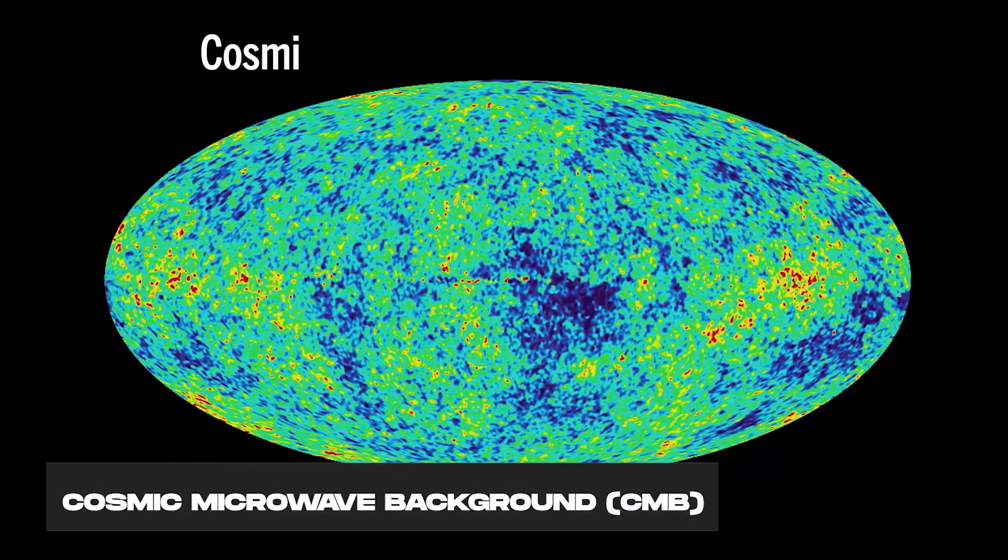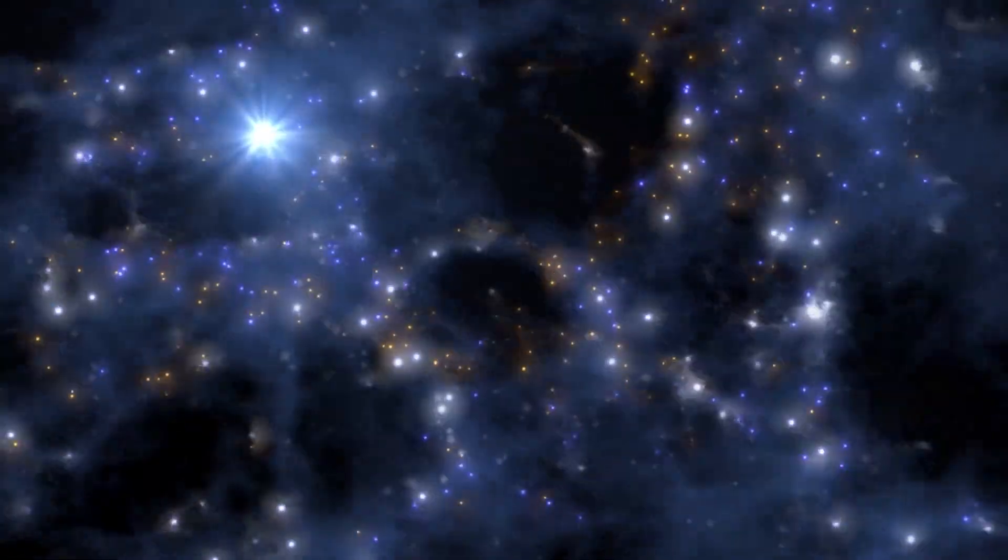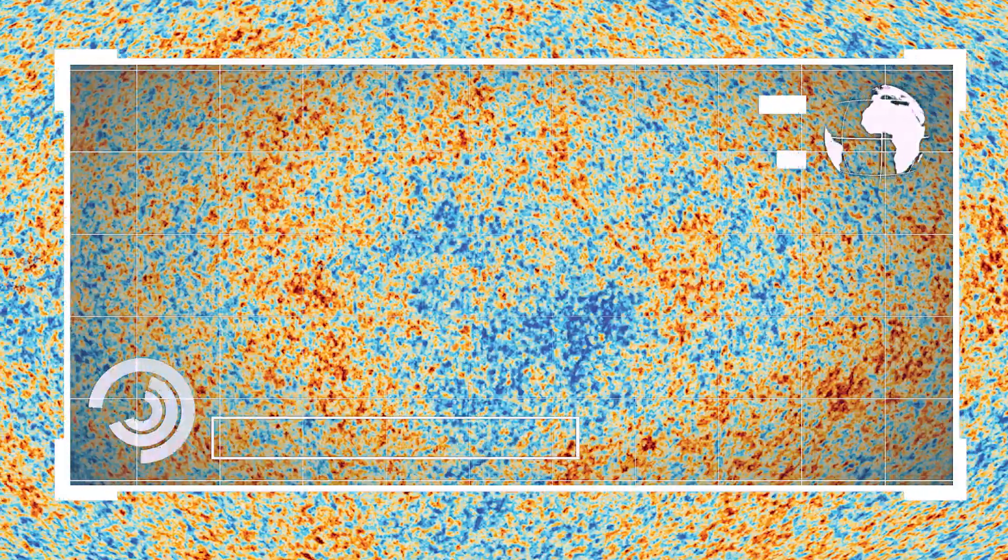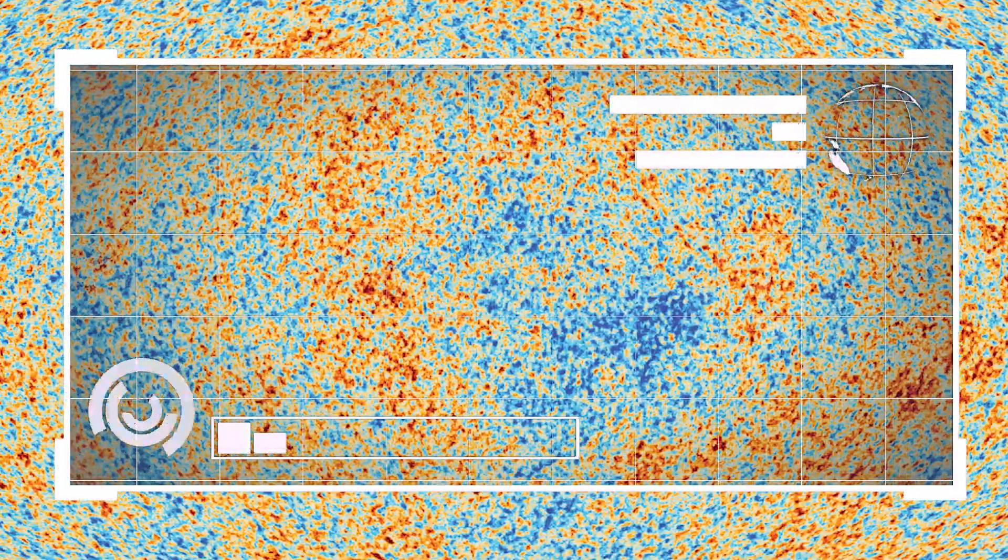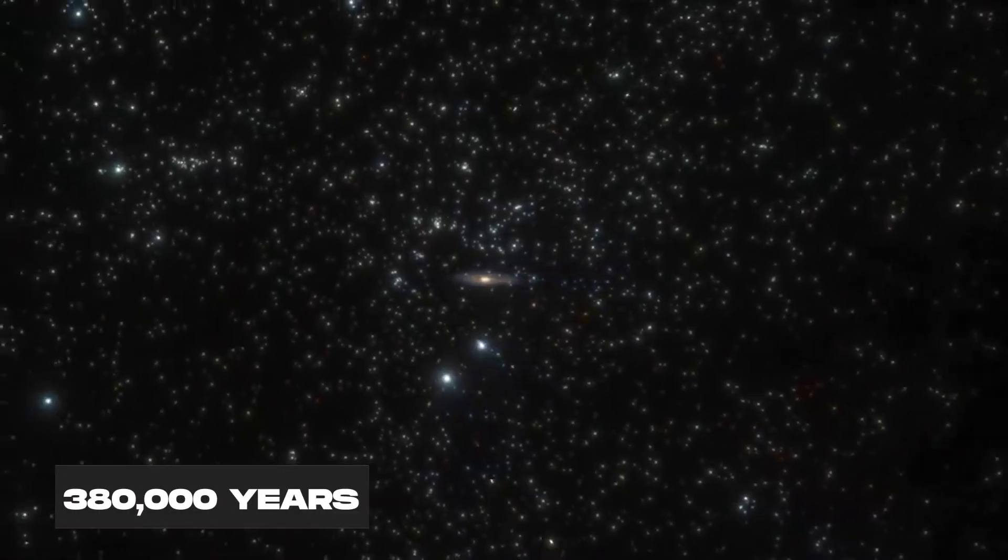One way is to use the cosmic microwave background, CMB, which is the ancient glow from the Big Bang that covers the whole sky. By studying the tiny differences in its heat and twist, we can guess how fast the universe was growing when it was just a baby, only 380,000 years old.